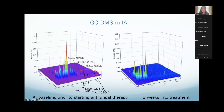In aspergillosis — this is a patient after a stem cell transplant, at baseline prior to starting antifungal therapy — on this axis is retention time. All the normal stuff like acetone and alcohols comes up early in a normal breath sample, and this area is usually sparse. But when you have aspergillosis, these secondary metabolites that are barely volatile come out at the very end of the run like this. You can see this patient had four different peaks in his breath, and even two weeks into therapy these peaks start going away.